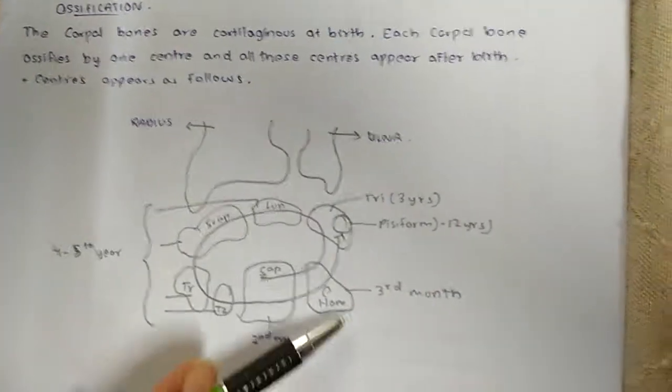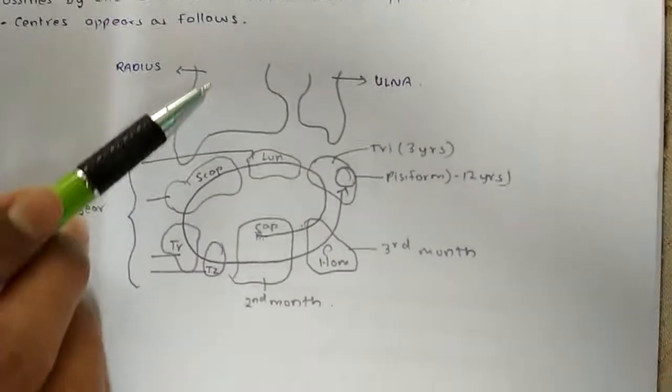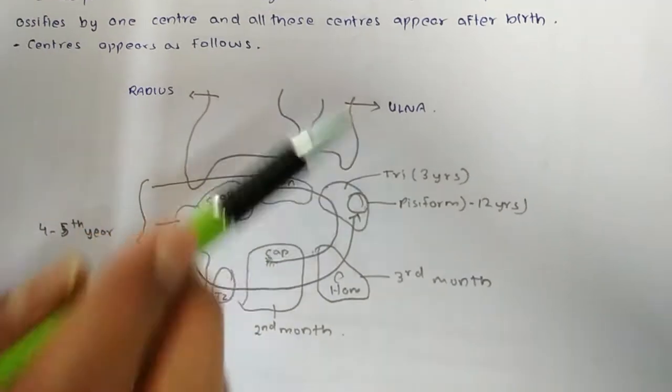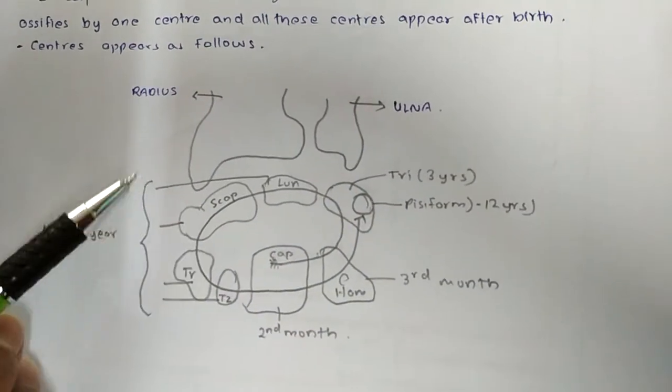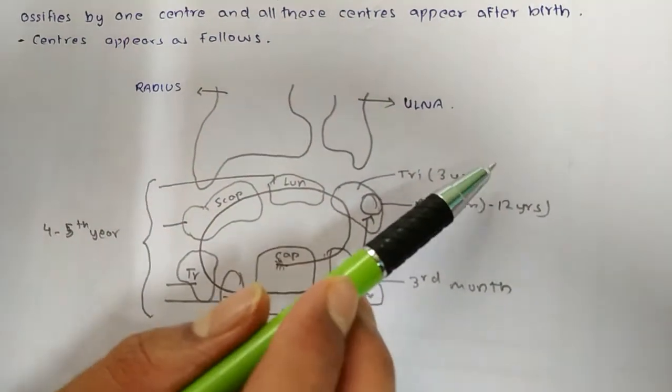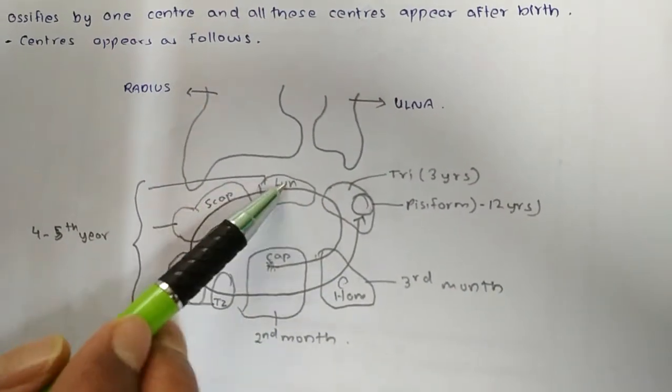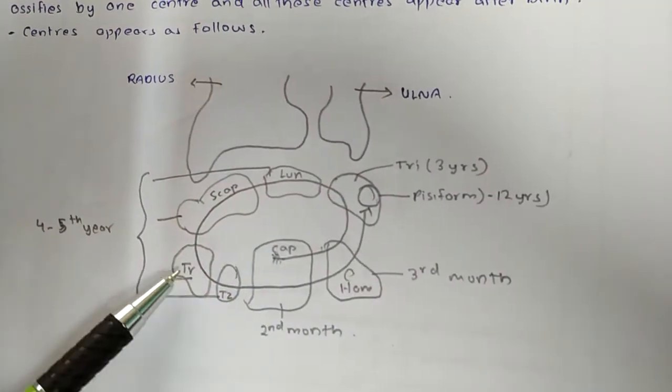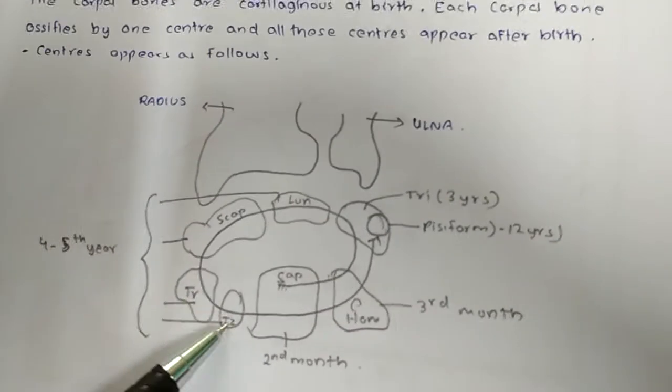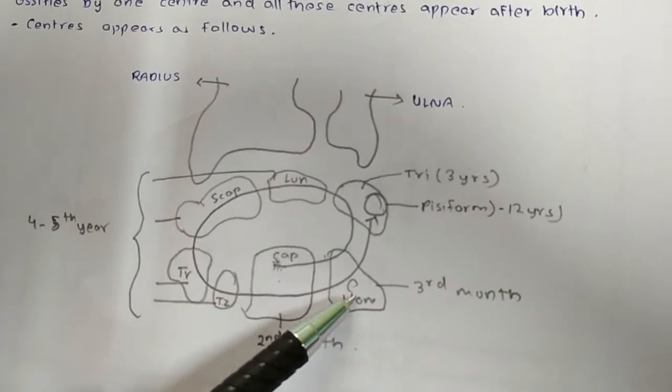Now this is the cross section of our wrist. This is the radius. This is the ulna. Now this is the lateral side and this is the medial side. From lateral to medial are scaphoid, lunate, triquetral, pisiform, trapezium, trapezoid, capitate and hamate.